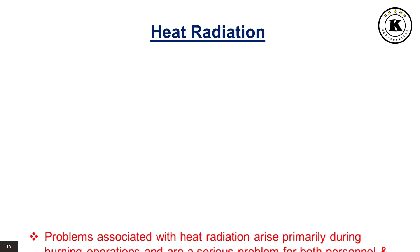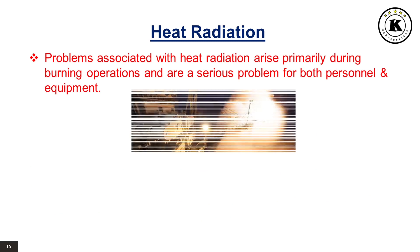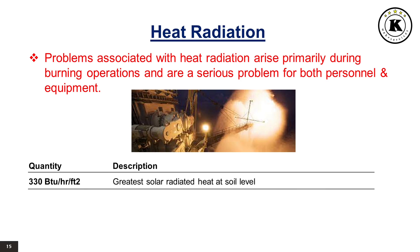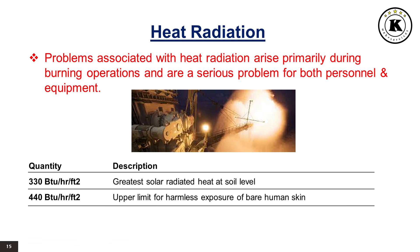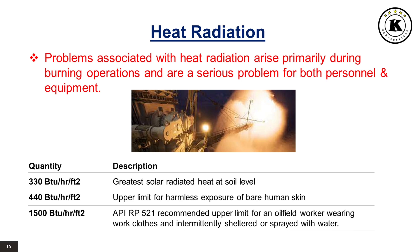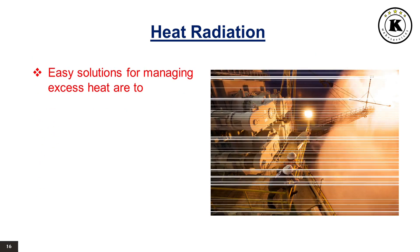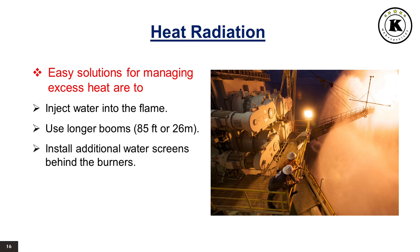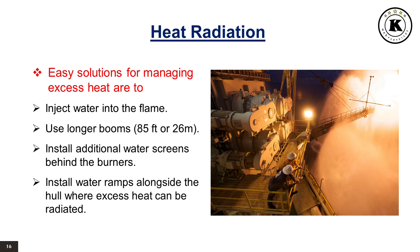Heat radiation: Problems associated with heat radiation arise primarily during burning operations and are a serious problem for both personnel and equipment. 330 BTU/hr/ft² is the greatest solar-radiated heat at soil level. 40 BTU/hr/ft² is the upper limit for harmless exposure of bare human skin. 1500 BTU/hr/ft² is the API RP521 recommended upper limit for an oilfield worker wearing work clothes and intermittently sheltered or sprayed with water. Solutions include injecting water into the flame, using longer booms (85 feet or 26 meters), installing additional water screens behind the burners, and installing water ramps alongside the hull.